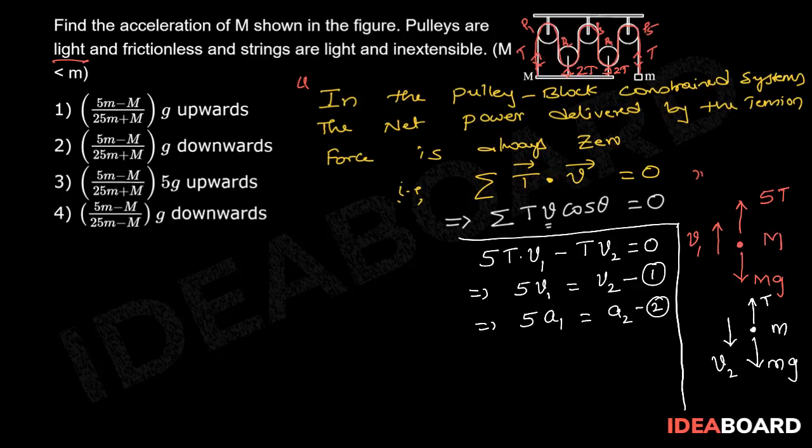Now, from the FBD of capital M, we can write capital M A1 equals 5T minus capital MG. And from small m FBD, we can write MA2 equals MG minus T.